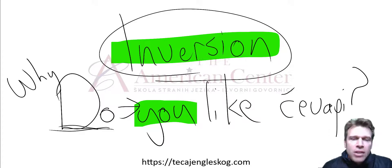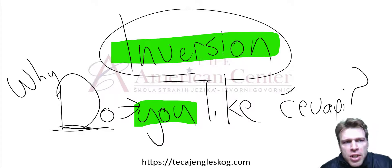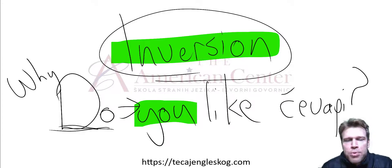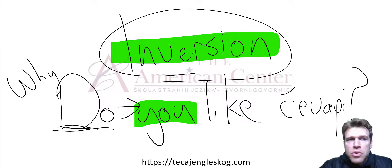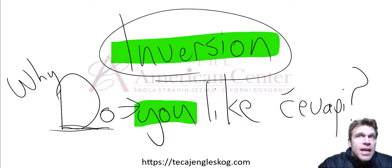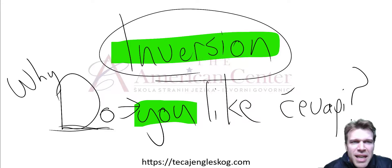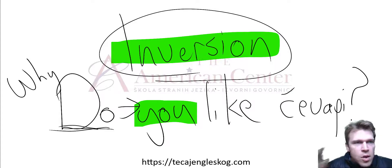In English, we usually answer as we're asked — it's a form of reciprocity. 'Do you like ćevapi?' — 'Yes, I do.' 'Did you eat ćevapi yesterday?' — 'No, I didn't.' 'Have you ever eaten ćevapi?' — 'Yes, I have.' We usually answer the same way something is asked, so we have to pay close attention and listen very closely.